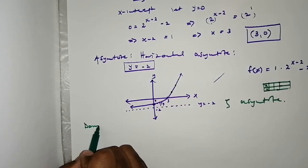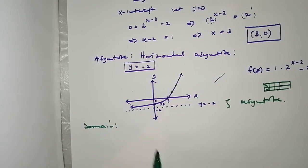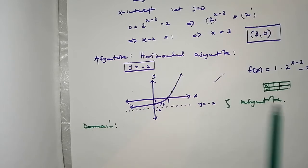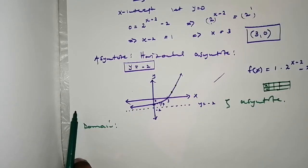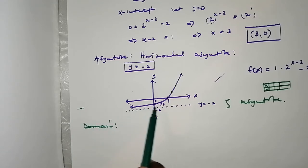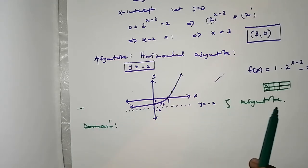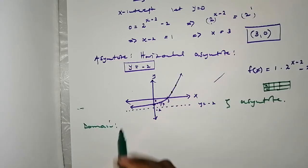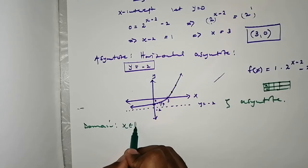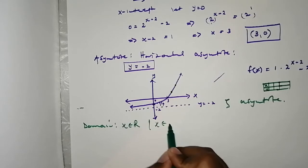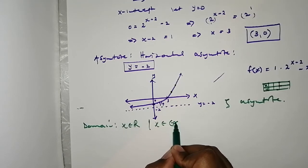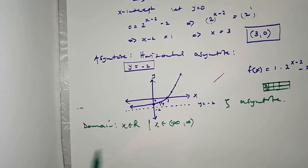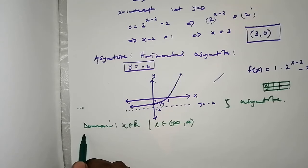Now let's find the domain of this graph — where the function is defined horizontally. From negative infinity going in both directions, the function is defined everywhere. So the domain of this function is x is an element of real numbers, or x is an element of the interval from negative infinity to positive infinity.